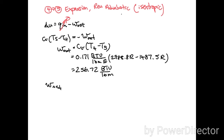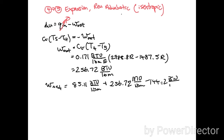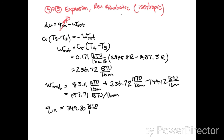The total net work equals 85.11 plus 256.72 minus 144.12, which works out to 197.71 BTU per pound mass. The total heat input equals the sum of the two heat addition stages: 349.30 plus 9.29 BTU per pound mass, summing to 358.59 BTU per pound mass.